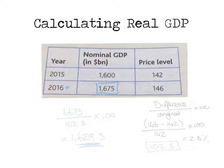Now if we compare the nominal GDP here with this figure here, you can tell that it's actually taking into account inflation. We know that there has been a level of inflation, so we know that the real GDP must be less than the nominal GDP. So when we look at these figures, it looks realistic. You can tell that you've done the calculation correctly and that it has taken inflation into account. So that would be our real GDP for 2016.